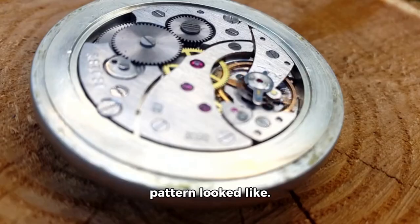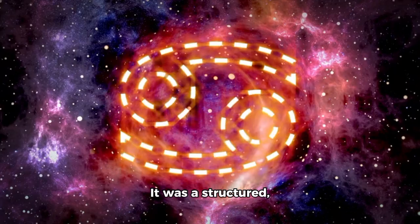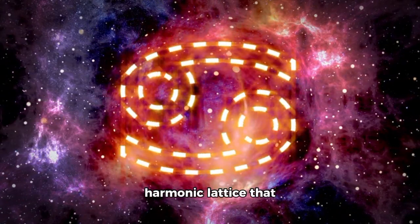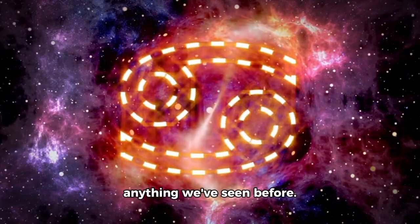That is what the Omega Pattern looked like. It wasn't a random spike or one-off glitch. It was a structured, harmonic lattice that repeats, a kind of cosmic loop that didn't match anything we've seen before.